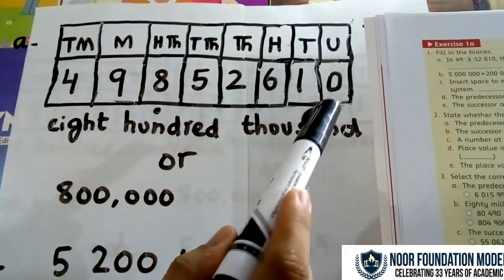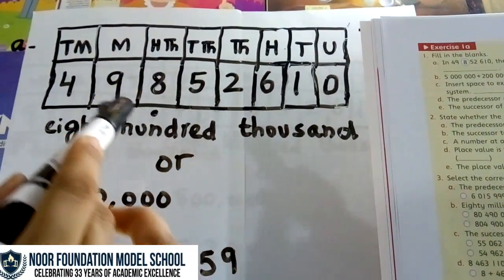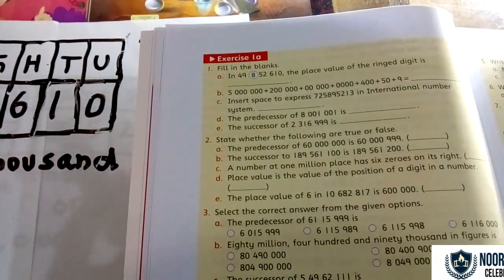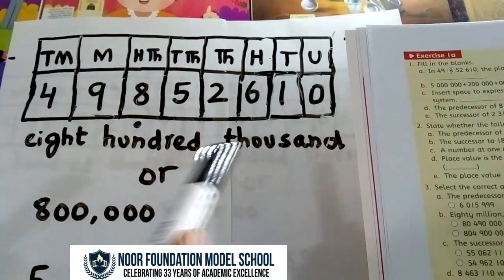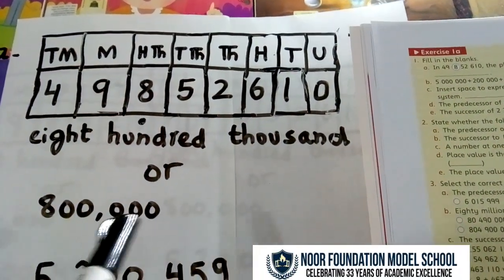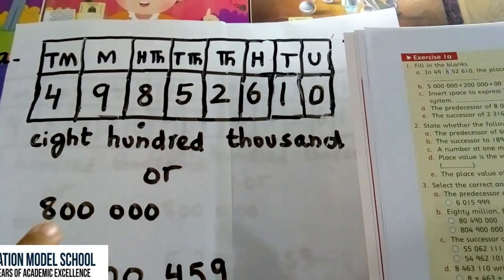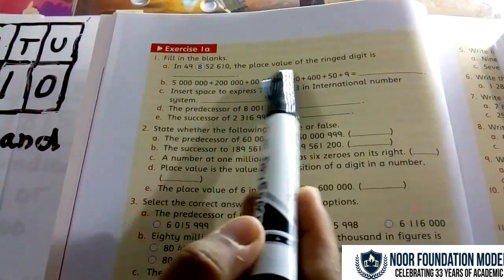When you have written the number, after that you can easily identify the ringed digit. The 8 had a ring on it, you have to tell the value of 8. So, 8 is in the hundred thousand place. This is 800,000 or eight hundred thousand. You can write a comma or give a little space.